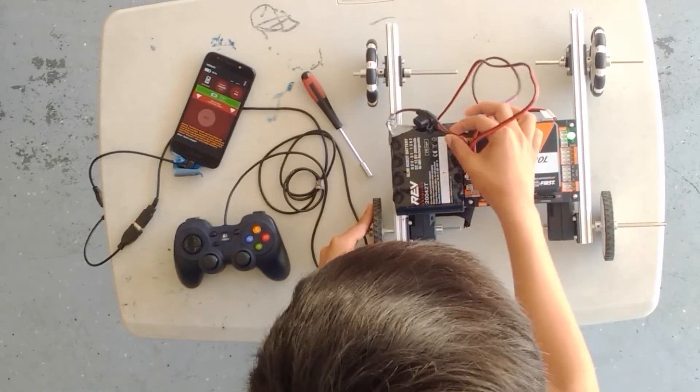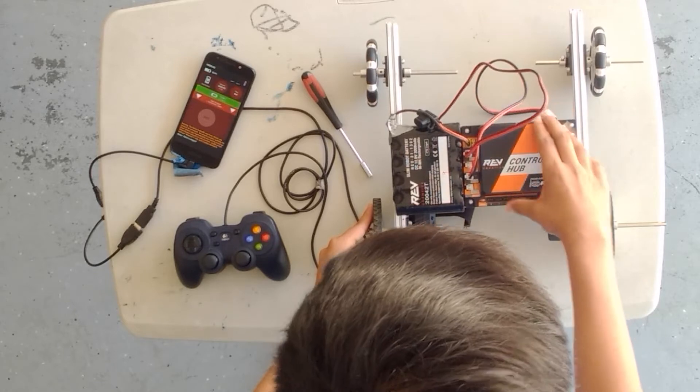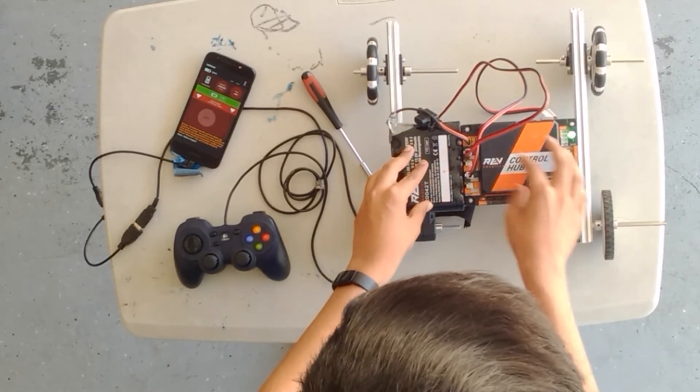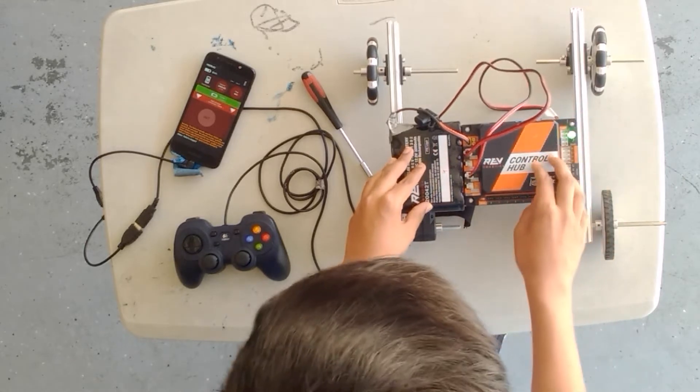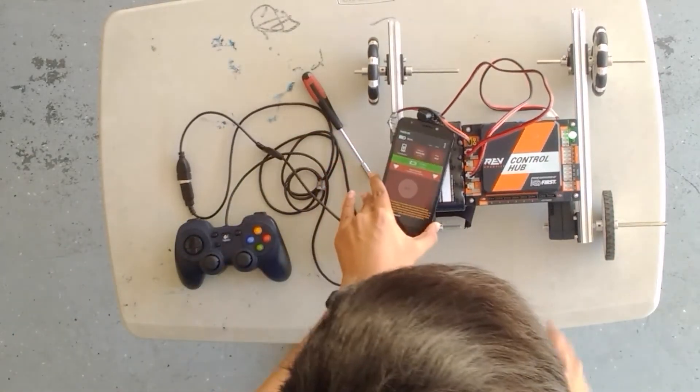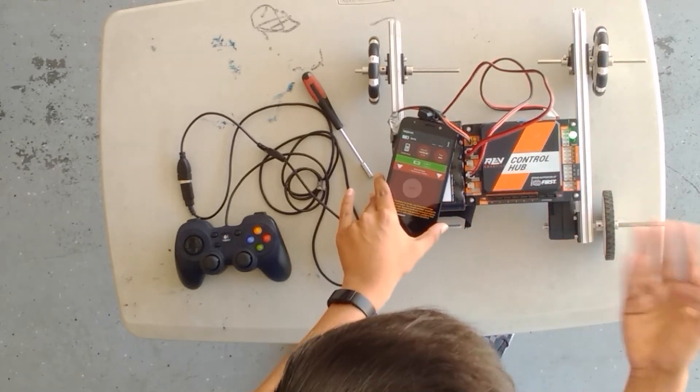Essentially here we have the wire which connects to the control hub and this is the battery pack. The battery pack is powering the control hub. Then the control hub is actually going to connect to this phone right here and this phone is going to be how you control the robot.